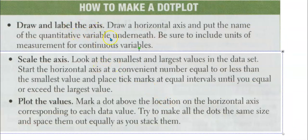If you look down, this is what a picture of a dot plot looks like. So how are we going to make that? I want you to draw and label the horizontal axis. Draw a horizontal axis, put the name—can't stress that enough—name the quantitative variable underneath.